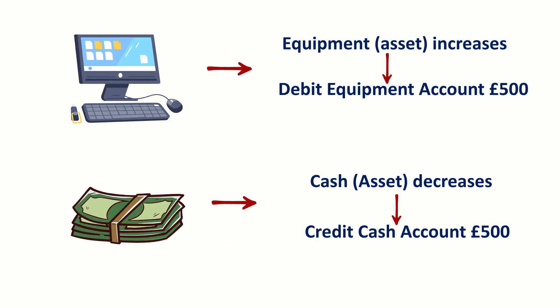Let's take an example. The business buys a computer for £500 cash. What's happening here? The business is getting a computer, which is an asset. When an asset increases, we debit that account. So we record debit equipment account £500, because our equipment, or assets, have gone up.